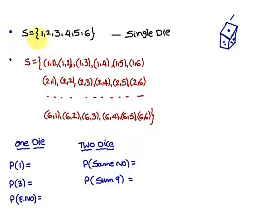of one, two, three, four, five, six. So this is about a single die.